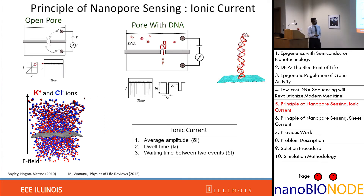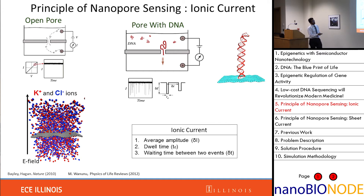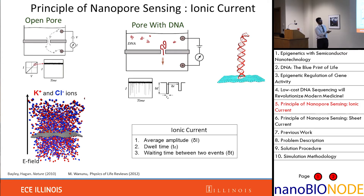When I introduce a DNA in the upper chamber and it goes through the pore, it will block this ion flow. This is fundamentally what is known as ionic currents. This ionic current gives us three pieces of information: the amplitude, which tells you the volume of the DNA across the sample; the dwell time, which tells you how long the DNA is; and the wait time, which is the difference between two events monitored in this current.